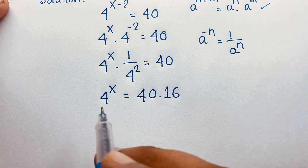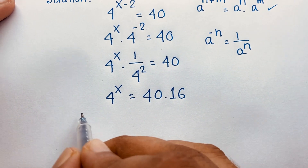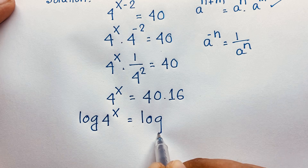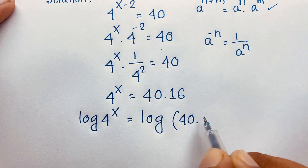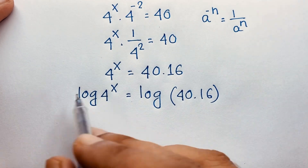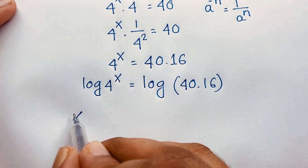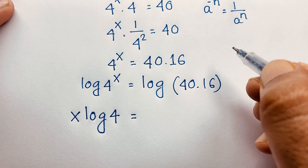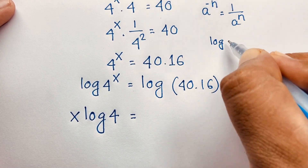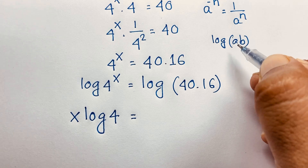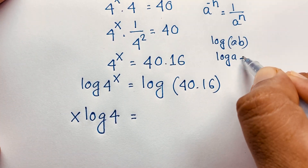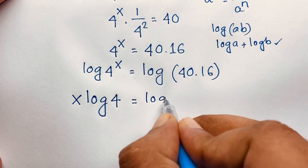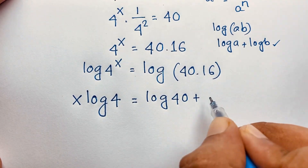I apply the natural log to both sides. So log of 4 to the power x is equal to log of 40 times 16. The x moves in front, so x times log 4 is equal to log of 40 times 16. Using the log product rule — log(a·b) equals log a plus log b — it will be log 40 plus log 16.